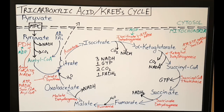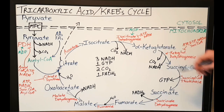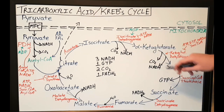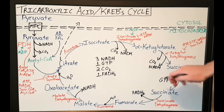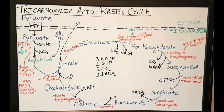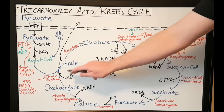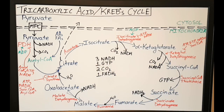That was a quick overview of the pathway. At the end of the pathway, what have we actually got? We have 2 CO2, 3 NADH, 1 GTP, and 1 FADH2. We've also used 2 water molecules in the Krebs cycle.